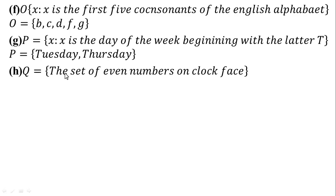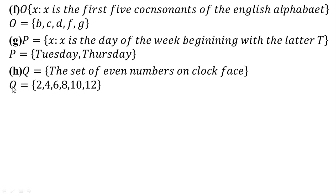In part H, Q is the set of even numbers on a clock face. We write only the even numbers on a clock face. Q = {2, 4, 6, 8, 10, 12}. Even numbers are divisible by 2. So the answer for part H is Q = {2, 4, 6, 8, 10, 12}.